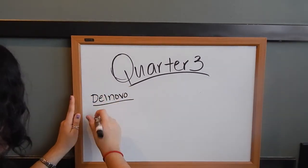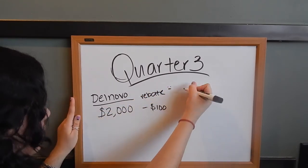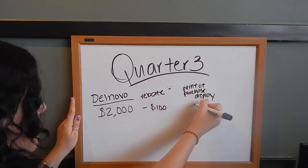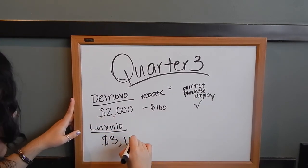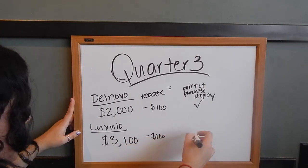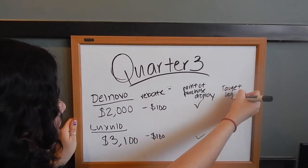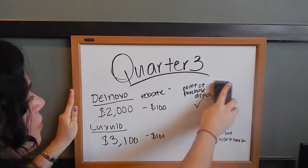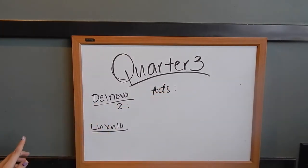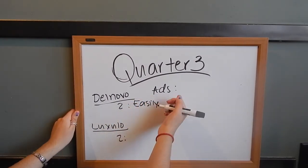Back to our computers, Del Novo was priced at $2,000, with a rebate of $100, and had a point of purchase display. This was liked by Costcutter's segment. Luxolo was priced at $3,100, with a rebate of $100, also had a point of purchase display, and was liked by the Workforce segment. And finally, both computers had two ads, in order to understand what our customers really wanted.